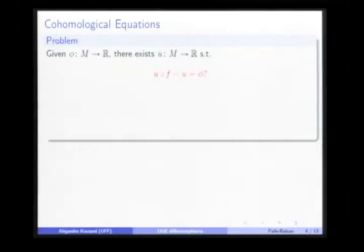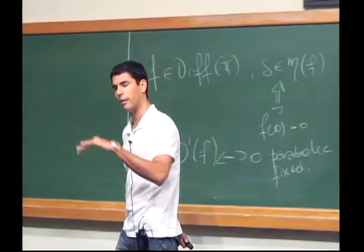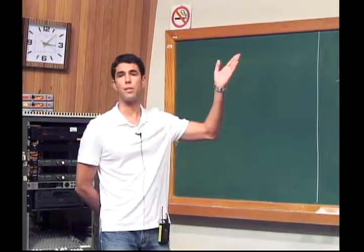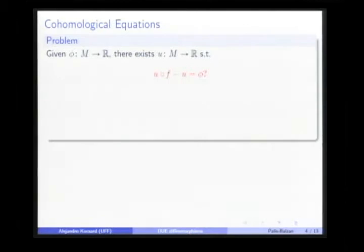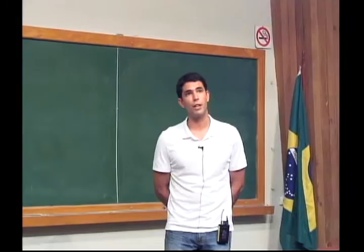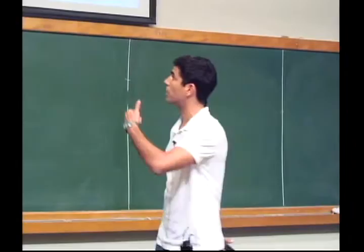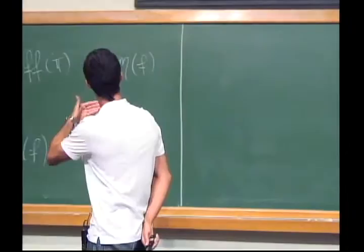The more interesting motivation for studying distributions are cohomological equations, and in fact they are my original motivation. A cohomological equation is essentially a very simple linear difference equation where phi is the data of the problem and u is the unknown function. This kind of equation appears very frequently in different contexts in dynamical systems, and in general it's not easy to determine if a given function phi admits a solution or not. Typically you study the space of those functions that admit a C^r solution, which are called C^r co-boundaries.